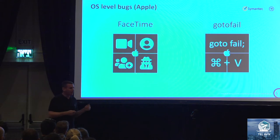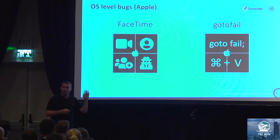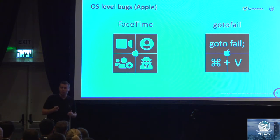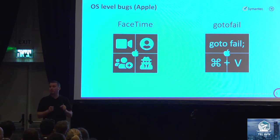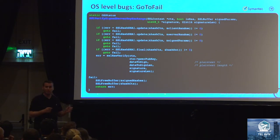A more interesting example of a notable security issue in operating systems is go-to-fail. This is a security issue identified a few years ago that actually existed in iOS for about 17 months until it was patched. For those of you that develop, it might be very familiar from your own history.